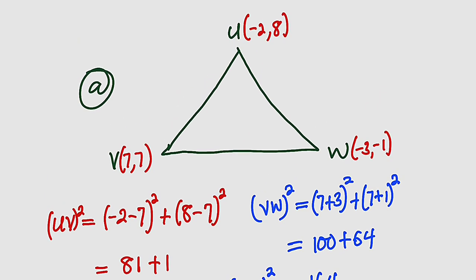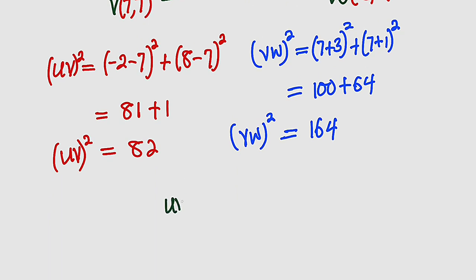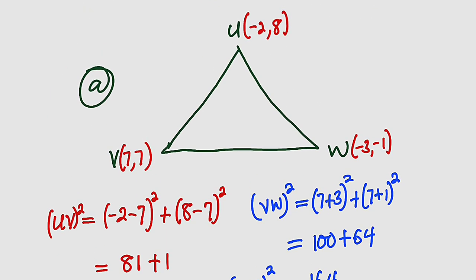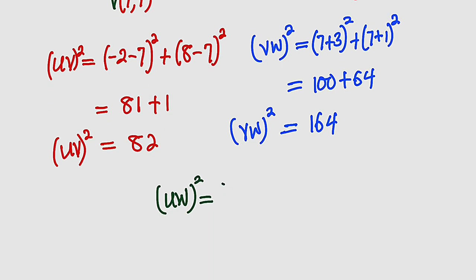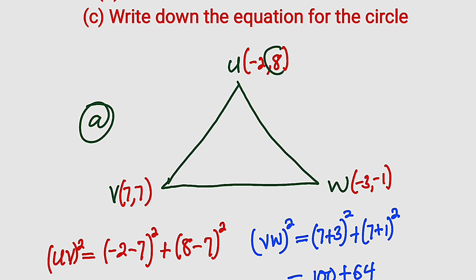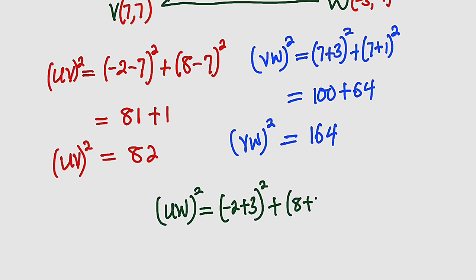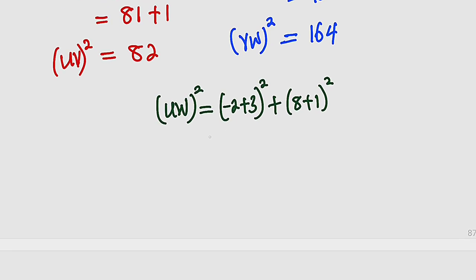Then the last one, UW. UW² = (-2 - (-3))² + (8 - (-1))² = (-2 + 3)² + (8 + 1)² = (1)² + (9)² = 1 + 81 = 82. That is UW².